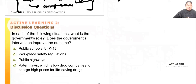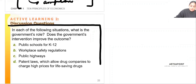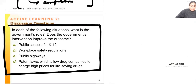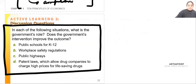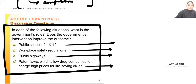As an assignment, consider the role of government in each of the following: public schools, workplace safety regulation, public highways, and patent laws. Try to solve these questions.